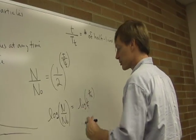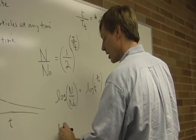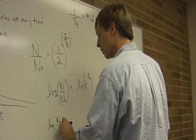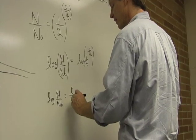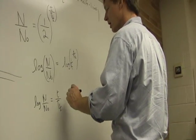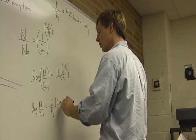And since logarithms bring that exponent down, I can say the logarithm of n over n sub 0 is equal to the time over the half-life times the logarithm of 1 half.